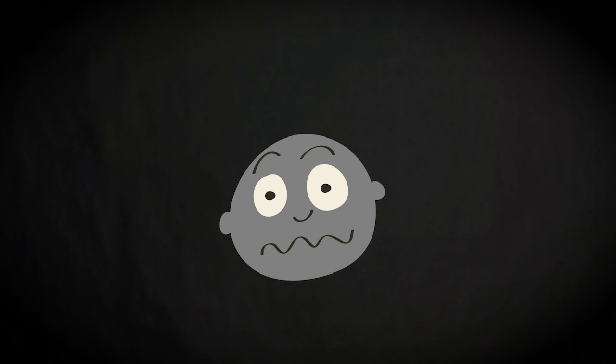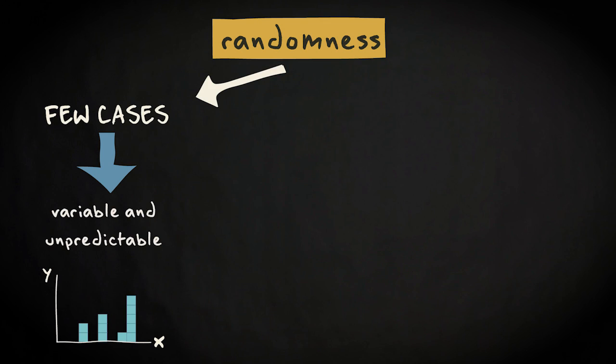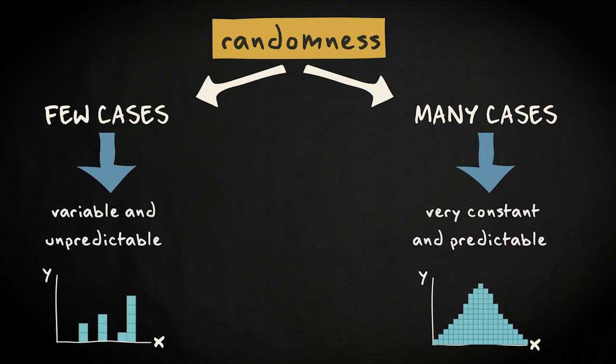The human brain may not be particularly fit to deal with the nuances of randomness, but fortunately there is a fundamental mechanism at work which helps to simplify our lives enormously. Randomness changes from something which is variable and unpredictable when considering a few cases, to something that's very constant and predictable when considering many. There's even a mathematical proof for this, the law of large numbers.